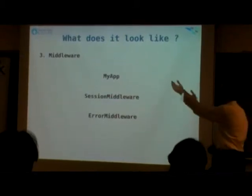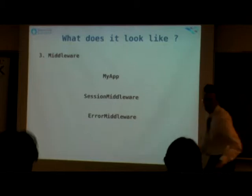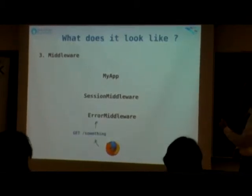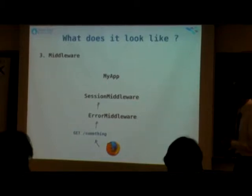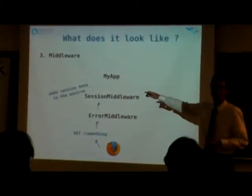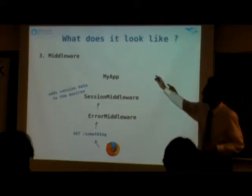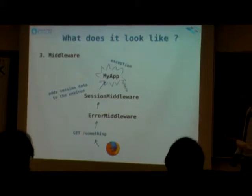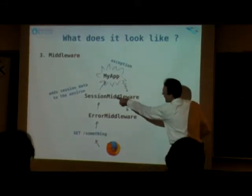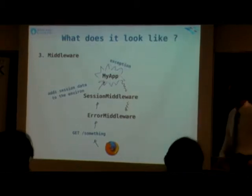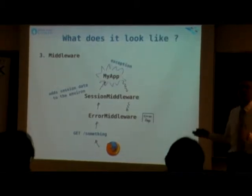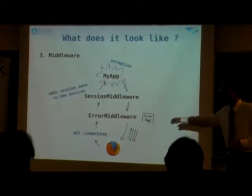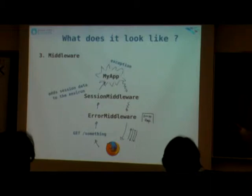For example, my application has a middleware stack — a session handler. When someone calls a request, it first goes through error middleware, which does nothing and just passes on the request. Session middleware adds session data to the environment dictionary — that's how data gets passed through all the layers. If my app crashes with an exception, it goes back through the error middleware, which creates a beautiful error page and sends back a nicely formatted response. We can also have real-time debugging over the web.